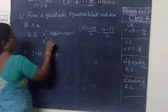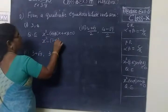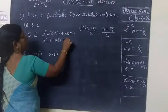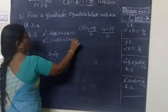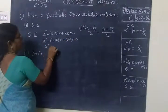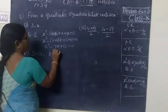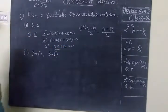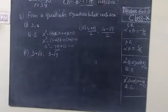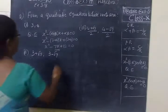So x square minus 3 plus 4 x plus 3 into 4 equal to zero. So x square minus 7x plus 12 equal to zero. So this one is correct.